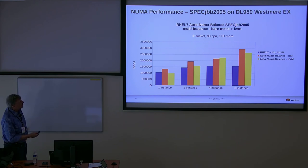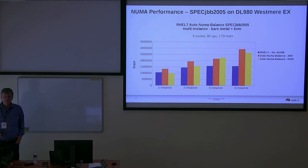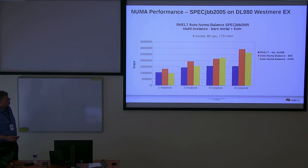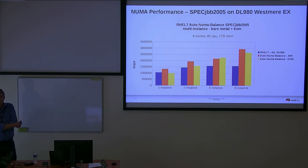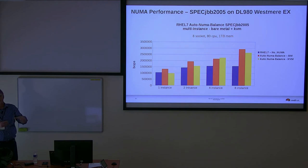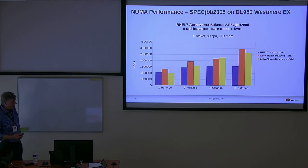Auto NUMA balancing can be toggled via TuneD profiles. You can see a big performance difference with it enabled versus disabled. There are TuneD profiles that disable auto NUMA so processes stay wherever they landed at startup. Some database applications run better this way because their memory footprint may be larger than a single NUMA node — with auto-balancing on, the system can spend a lot of time chasing its tail trying to move pages, hurting performance.